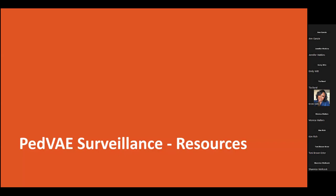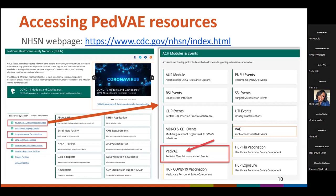Now that you have the background for the development of the PVAE surveillance definition, let's look at some important information to have before you begin surveillance. Where can you find all the information about PVAE surveillance? If you go to the NHSN homepage, you will see links to webpages for acute care, long-term acute care, and inpatient rehabilitation facilities, which are the types of facilities eligible to perform PVAE surveillance. On each of these facility pages, you will see the link to the PVAE webpage, as indicated by the red arrow on the right side of the screen.